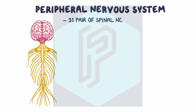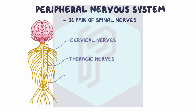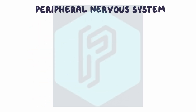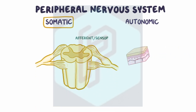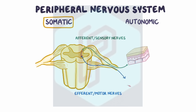There are also 31 pairs of spinal nerves which exit various regions of the spinal cord and innervate the rest of the body, including 8 pairs of cervical nerves, 12 pairs of thoracic nerves, 5 pairs of lumbar nerves, and 1 pair of coccygeal nerves. The somatic nervous system is made up of afferent or sensory nerves that carry sensory information from peripheral tissues like the skin back to cell bodies in the posterior horns of the spinal cord, as well as efferent or motor nerves carrying motor information from cell bodies in the anterior horns to the neuromuscular junction, where those axons contact skeletal muscle cells.